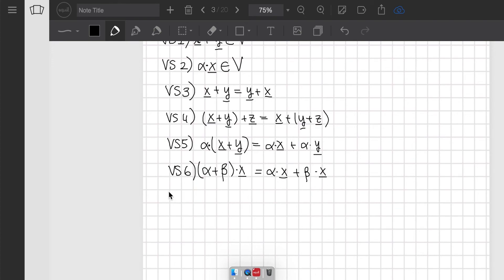And then we also have associativity for scalar multiplication. So if we take alpha, beta, x, and we take this scalar multiplication, then this is equal to alpha beta, this is multiplication in the field F, and then dot x.